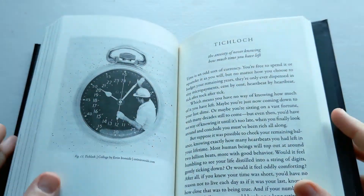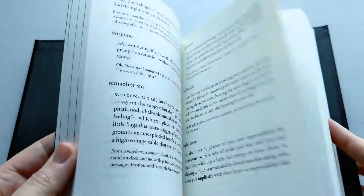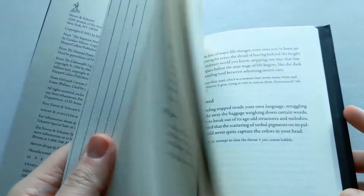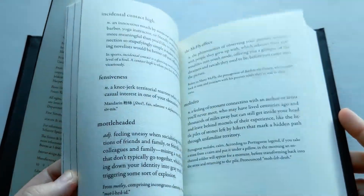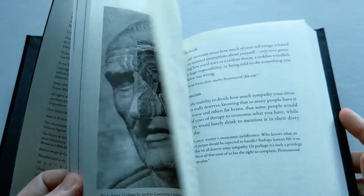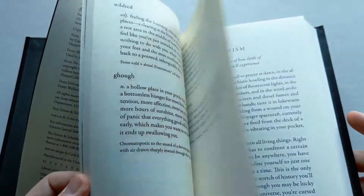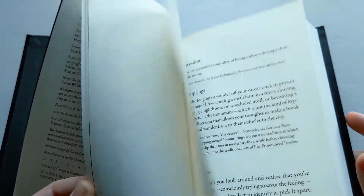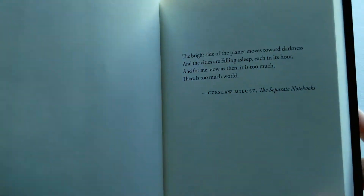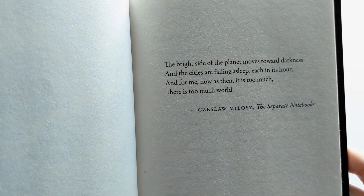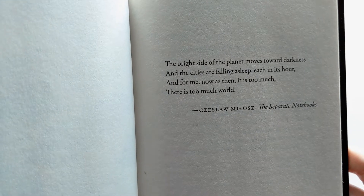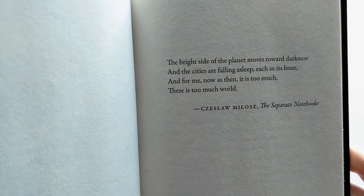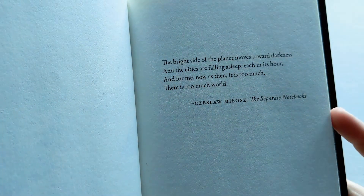That's something I struggle with quite a lot actually. And not only that — as you can see flipping through the pages, there are some illustrations, quite a few images throughout. There are also quotes, including one from Czesław Miłosz: 'The bright side of the planet moves toward darkness and the cities are falling asleep each in its hour, and for me now there is too much world.' Isn't that the truth.